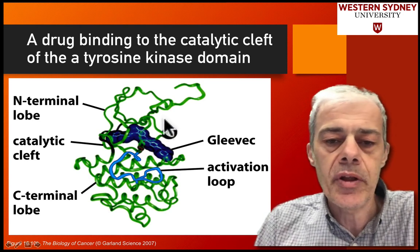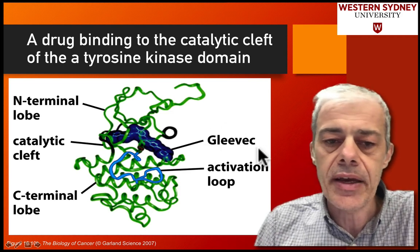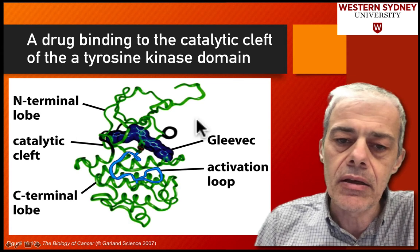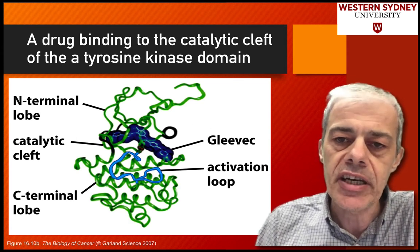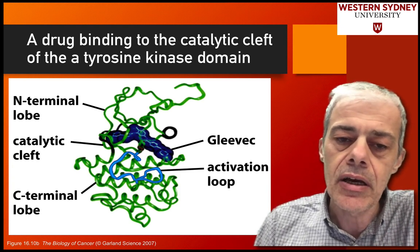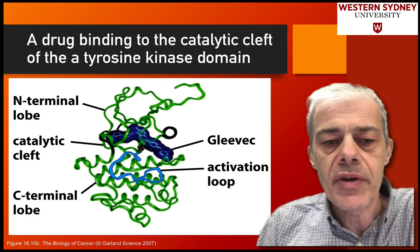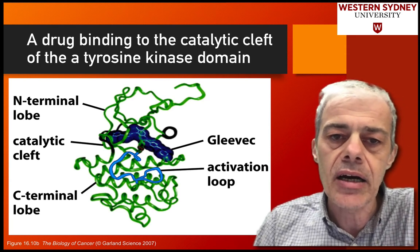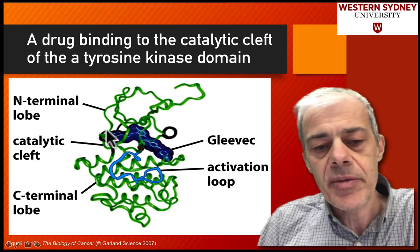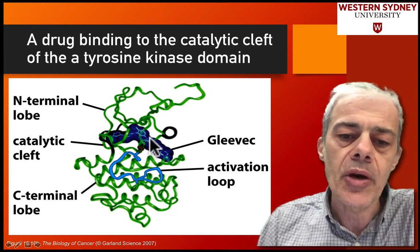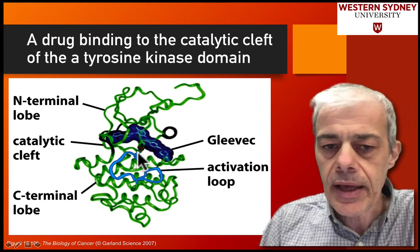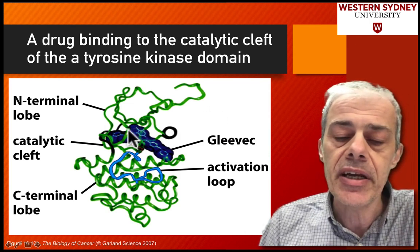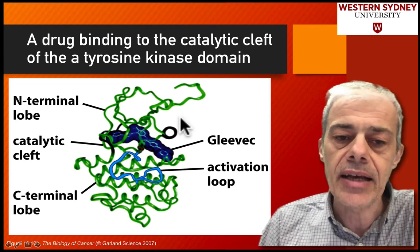Gleevec is a tyrosine kinase inhibitor. In the cell, there's a range of proteins with tyrosine kinase activity, and these are often found in signaling pathways. People have designed small molecules to target the catalytic clefts in these oncoprotein tyrosine kinases. The three-dimensional structure of a particular tyrosine kinase shows a site that would typically bind ATP, but Gleevec binds there instead, stopping ATP from coming in and preventing the enzyme from acting as a kinase.